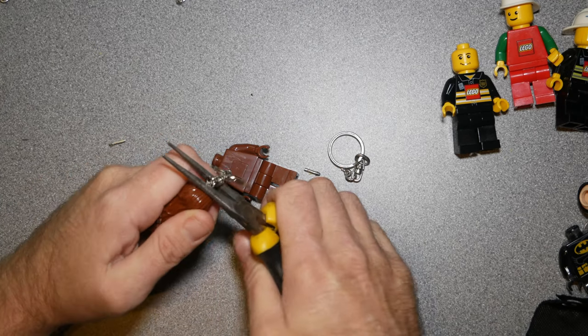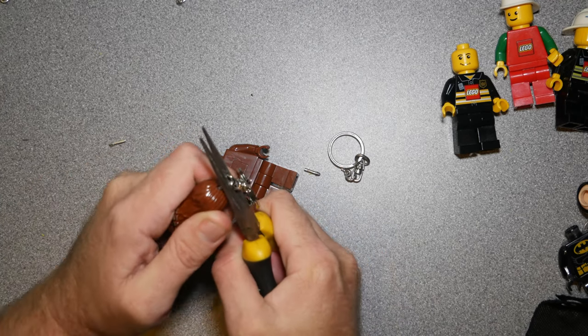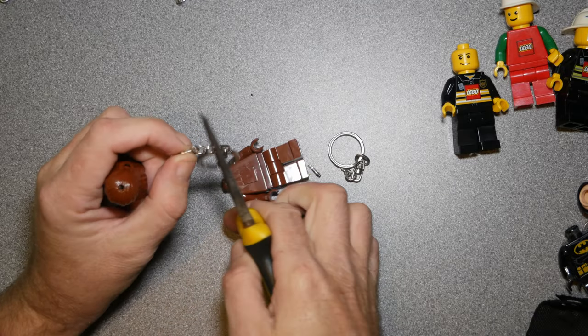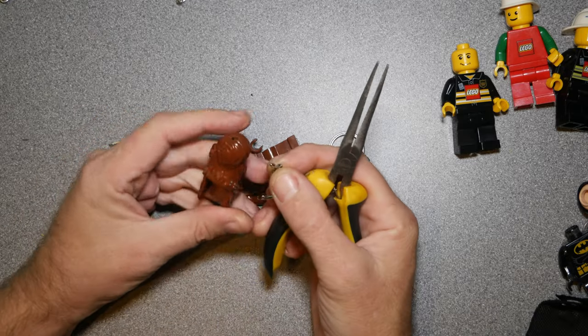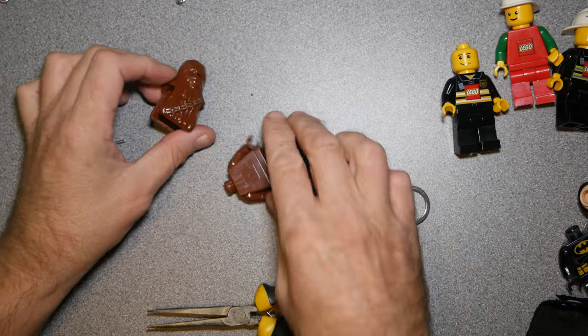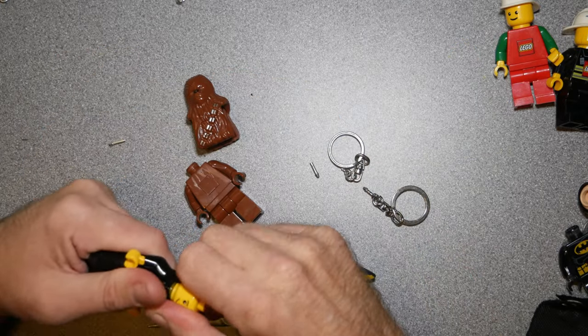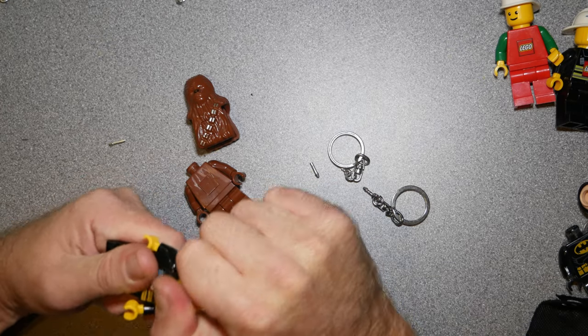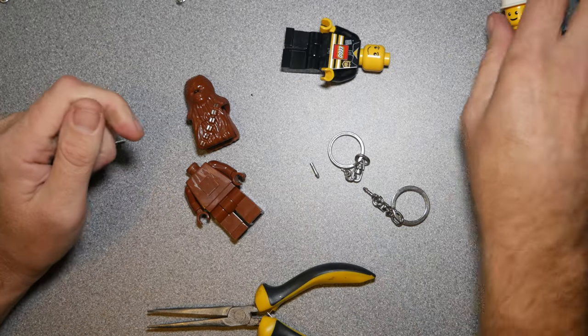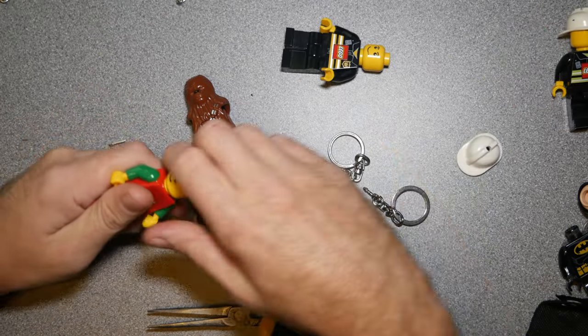This also works with ones that have the head attached to like a body part, like with Chewbacca here. This then can, you take the pin out and then the head with the actual like costume or whatever can come off and then that can go on to other minifigs so you can change like the colour of the trousers and etc like that.